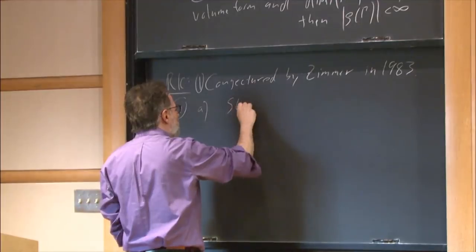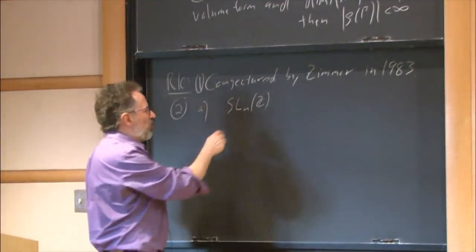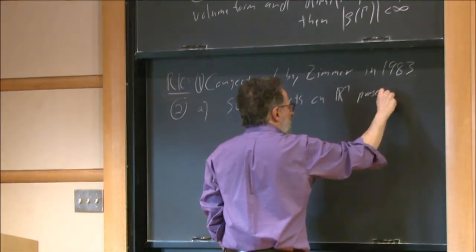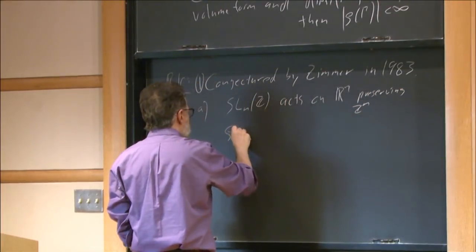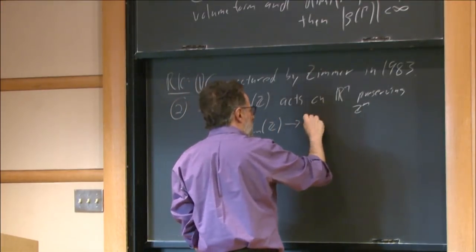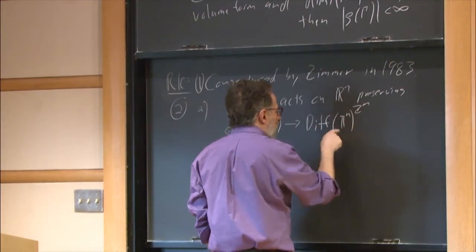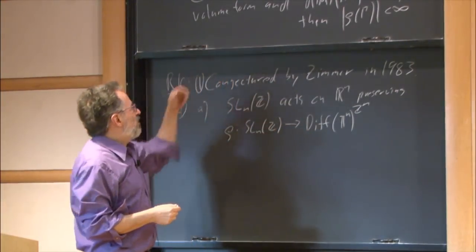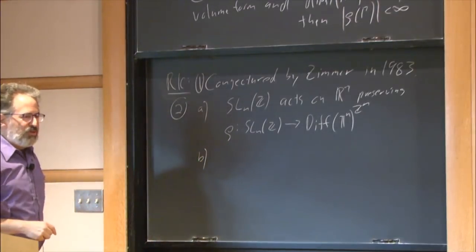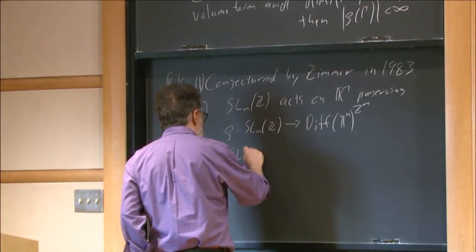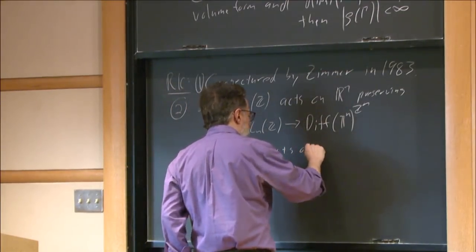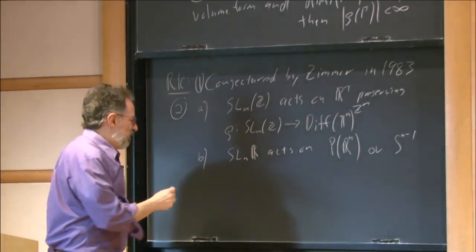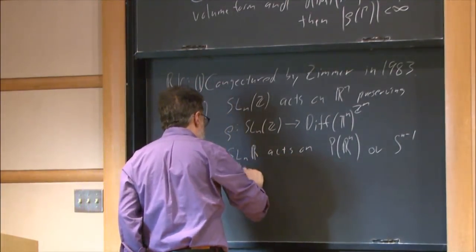The second remark involves two examples showing sharpness. First, SL(N,Z) consists of N by N integer matrices of determinant 1, which act on R^N preserving Z^N. So we get rho from SL(N,Z) into diff of the N-torus, and just because these are determinant-1 matrices, you're volume-preserving here. So the second statement is sharp. Also, all of SL(N,R) acts on the projective space of R^N, so both statements are sharp.